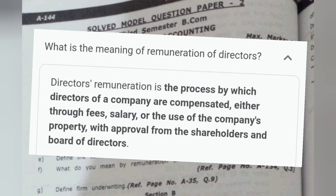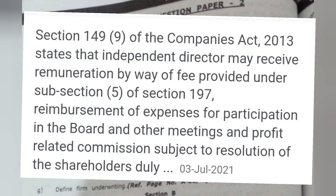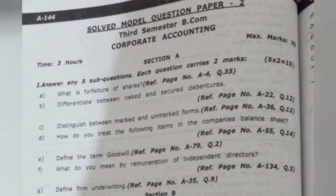What do you mean by the remuneration of an independent director? Director remuneration is the process by which directors of a company are compensated either through fees, salary, or the use of the company's property, with approval from the shareholders and board of directors. The Companies Act 2013 states that an independent director may receive remuneration by way of fees provided under subsection 5 of section 197 as reimbursement of expenses for participation.